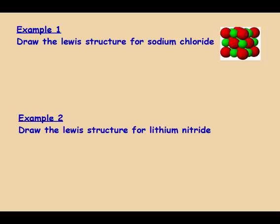The first step is to write the formula. For sodium chloride: sodium has a plus one charge, and chloride has a negative one charge. Using the crossover rule, the formula is NaCl, so we need one sodium and one chlorine.